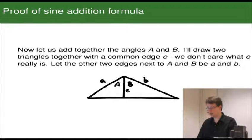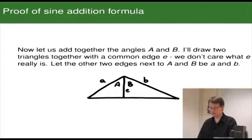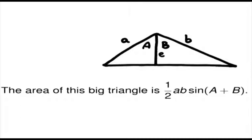Now let's go back to the sine addition formula and prove that. We'll add together angles A and B. I'll draw two triangles together with a common edge E — we don't actually care what E is at this stage. Let the other two edges next to A and B be little a and little b. The area of the big triangle is one half of AB sine(A+B), because we're taking theta to be A+B in the formula we've already proved.